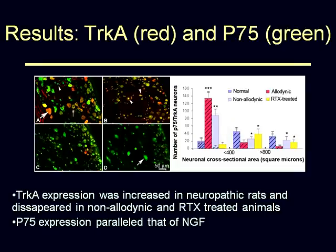We did the same staining for TrkA and P75 — TrkA is in red and P75 is in green. In allodynic animals, both TrkA and P75 are intensely concentrated on the small cells. Interestingly, the non-allodynic animals as well as the allodynic ones after RTX treatment exhibit similar patterns — TrkA is almost absent in both of them, and P75 is expressed mostly in the medium and large neurons.